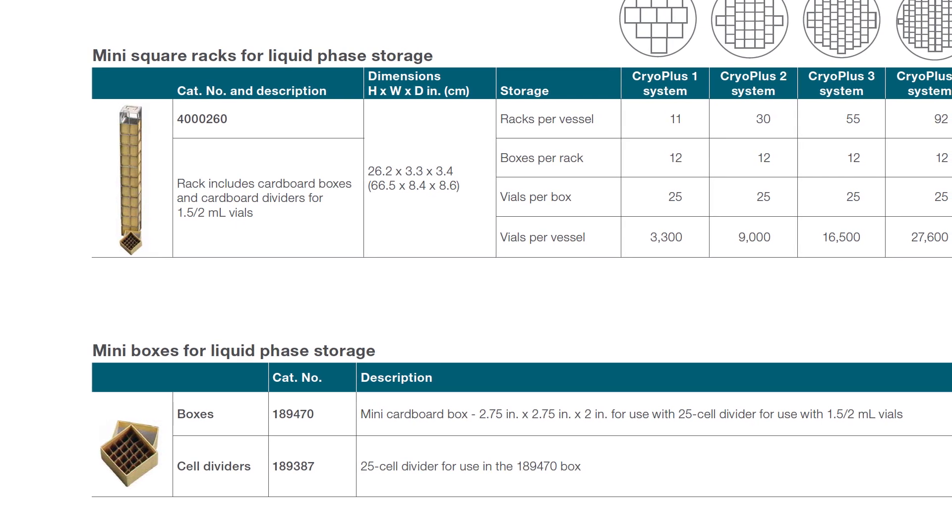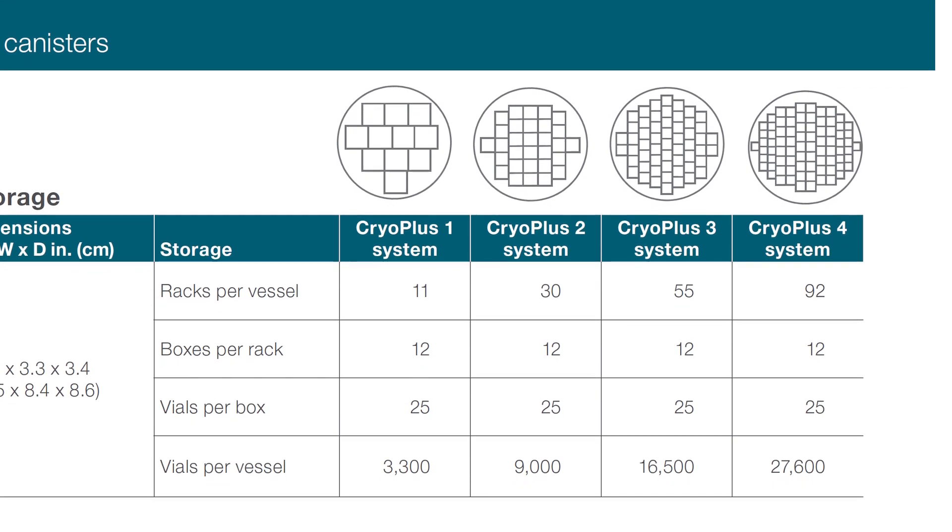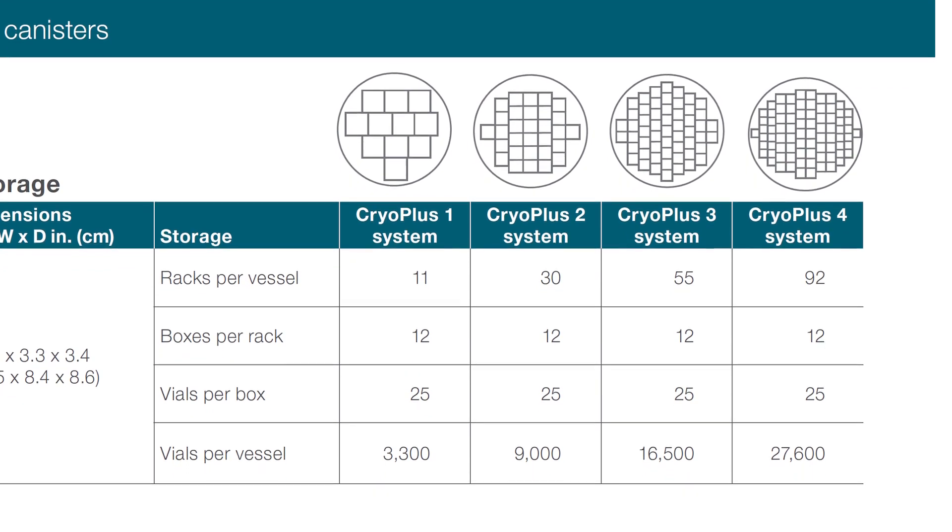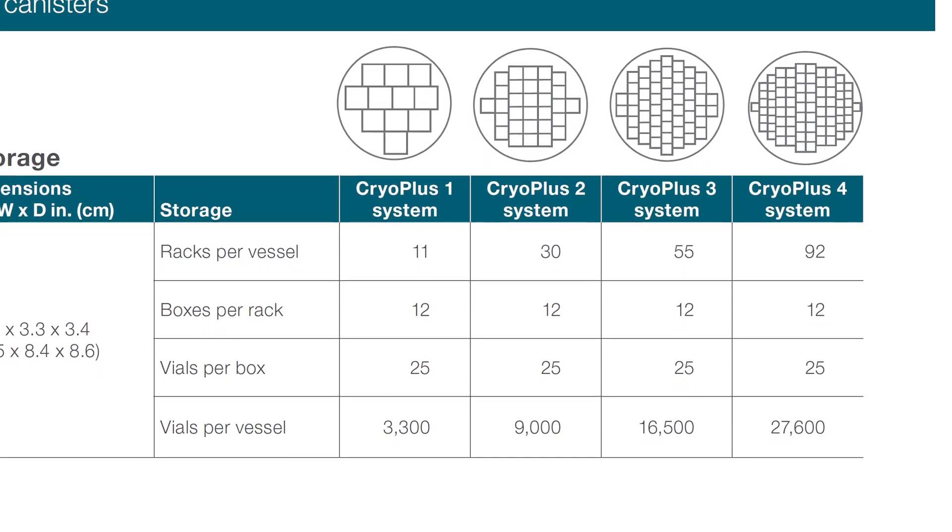The number of racks and recommended configuration depends upon the CryoPlus one, CryoPlus two, CryoPlus three, or CryoPlus four unit that you have. These smaller box rack options are available in liquid phase versions only.